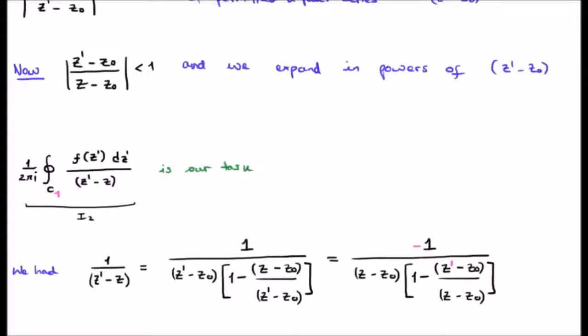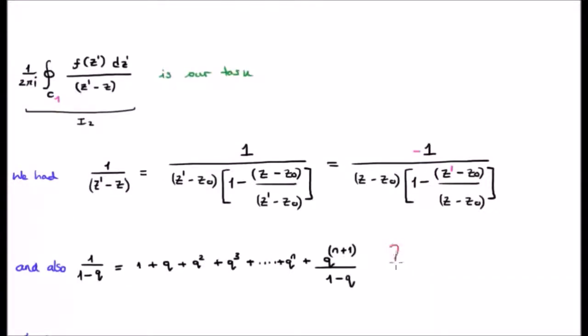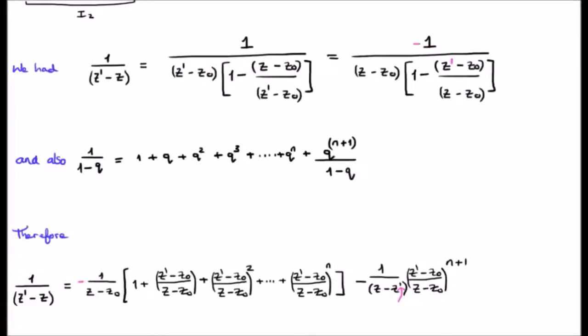We follow the exact same approach as we did with the Taylor series. We remember the formula 1 over 1 minus Q, which when applied gives us this particular expression for 1 over Z prime minus Z.